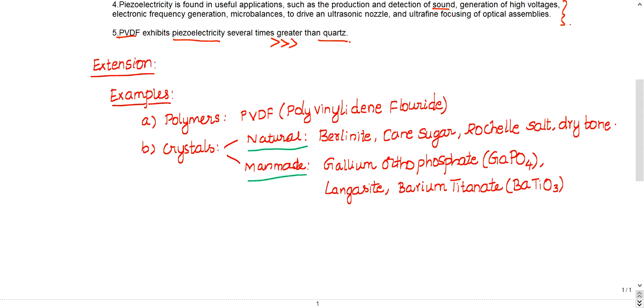Now let us see the extension - few more examples I have added. Piezoelectricity is shown by two kinds of materials. I have included only examples of polymers and crystals. Polymers - PVDF is an example of a polymer. PVDF stands for polyvinylidene fluoride, and it's a polymer.